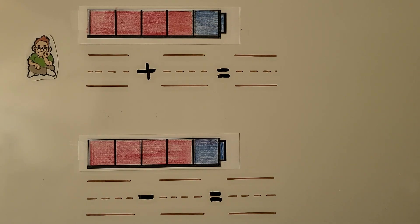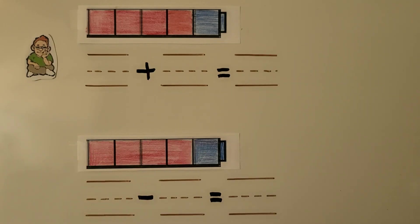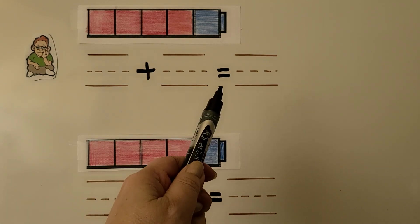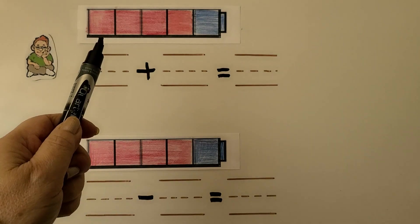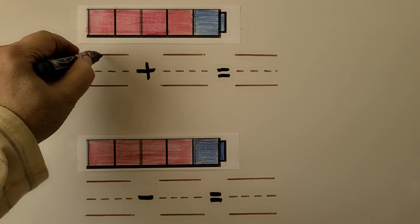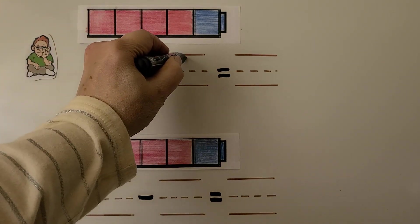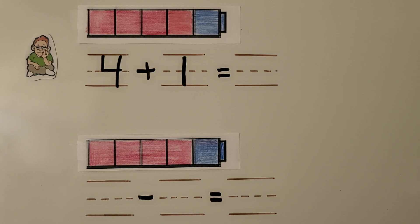Bill has four red cubes. He gets one blue cube. How many cubes does Bill have in all? We can write an addition sentence to show the numbers in each set with a plus and an is-equal-to symbol. There are four red and one blue. That's four red — we write the four — plus one blue. We can count how many in all to know what four plus one is equal to.